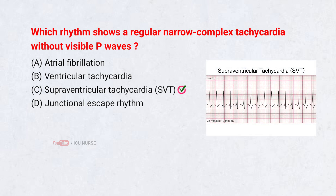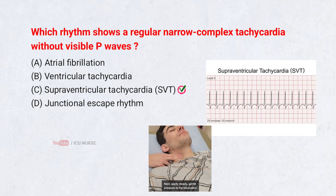SVT typically appears as a fast, regular rhythm with narrow QRS complexes and often no visible P-waves. Because the atrial activity is hidden within the QRS, it originates above the ventricles and responds well to vagal maneuvers.